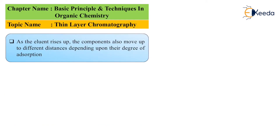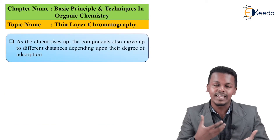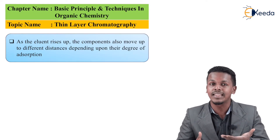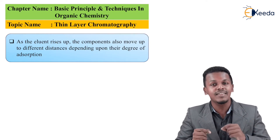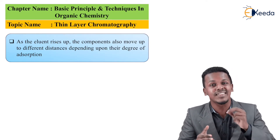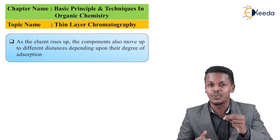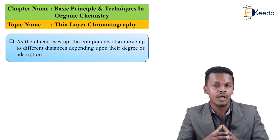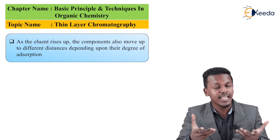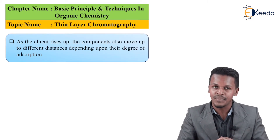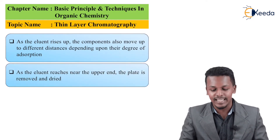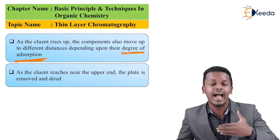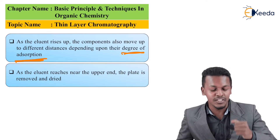As the eluent rises up, it carries along with it the mixture. Because of adsorption, the mixture — which consists of two components — will rise according to the solvent movement. We can then find the different positions of the components on the thin layer plate, depending on their degree of adsorption and the height to which each component is raised.